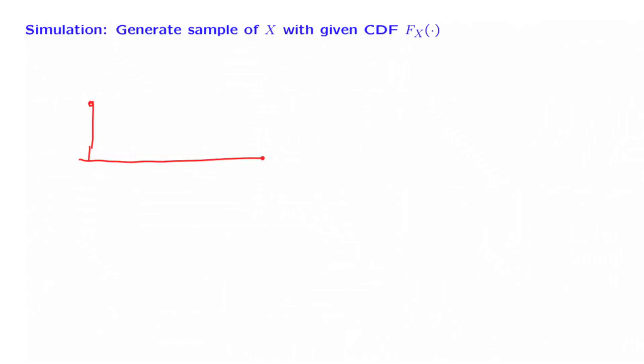Let us look at the discrete case first, which is easier, and let us look at an example. Suppose that I want to generate samples of a discrete random variable that has the following PMF: it takes one value with probability 2/6, another value with probability 3/6, and another value with probability 1/6.